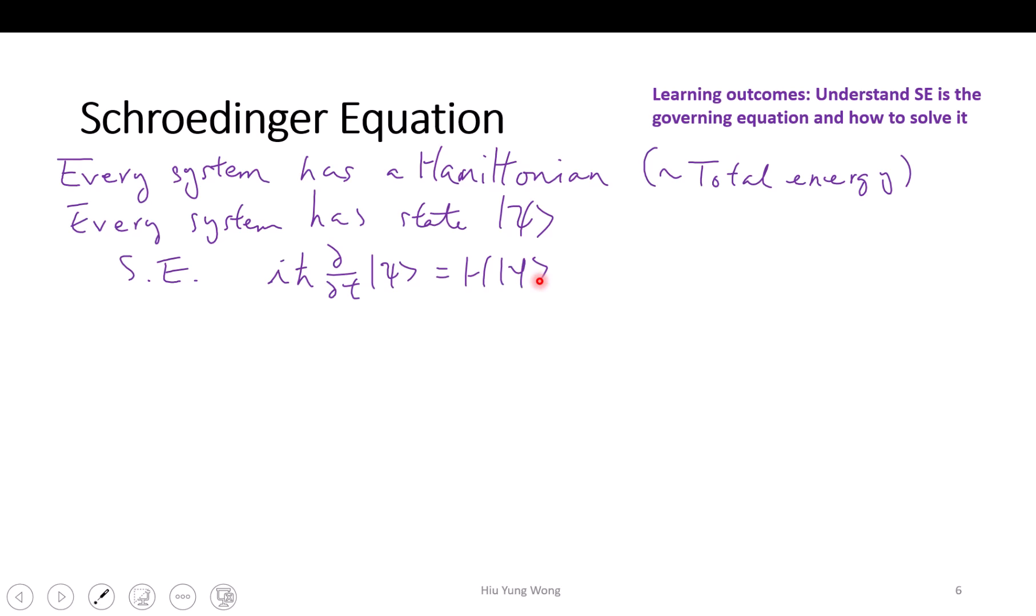What does it say here? It says I have a state, the rate of change of this state times i and h-bar equals to the Hamiltonian times the state itself.